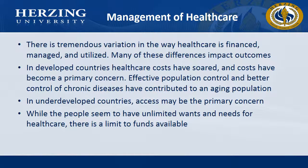Management of health care: There is tremendous variation in the way health care is financed, managed, and utilized. Many of these differences impact outcomes of health care. In developed countries, health care costs have soared and costs have become a primary concern. Effective population control and better control of chronic diseases has contributed to an aging population. In underdeveloped countries, access may be the primary concern, and while people seem to have unlimited wants and needs for health care, there is a limit to funds available to achieving health-desired outcomes.